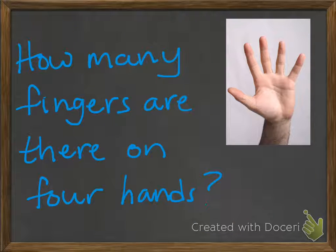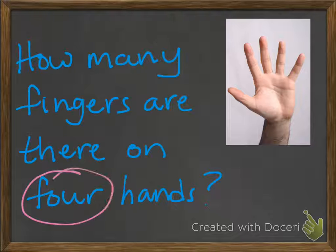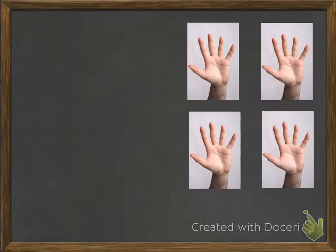Let's take a look at an example. How many fingers are there on four hands? In the picture here, we only have one hand. It's easy to count the fingers on one hand. But what about four hands? How do we do that easily? What pattern could we follow?